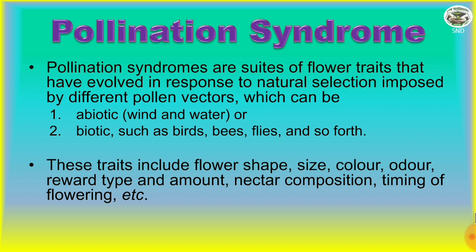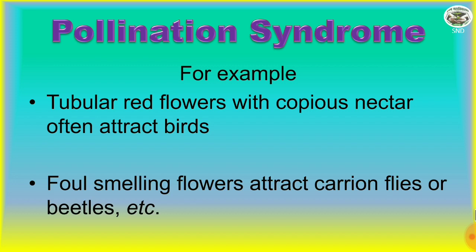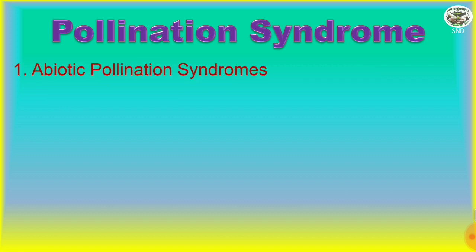These traits include flower shape, size, color, odor, reward type and amount, nectar composition, and timing of flowering. For example, tubular red flowers with copious nectar often attract birds, while foul-smelling flowers attract carrion flies or beetles.